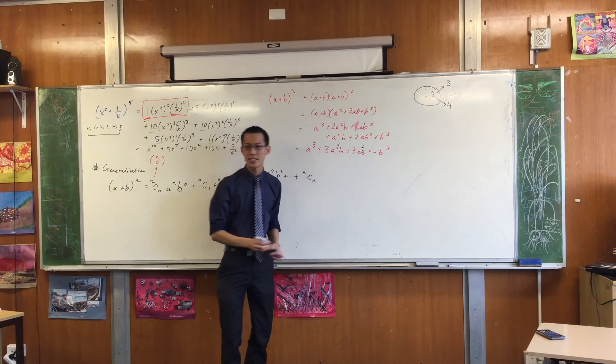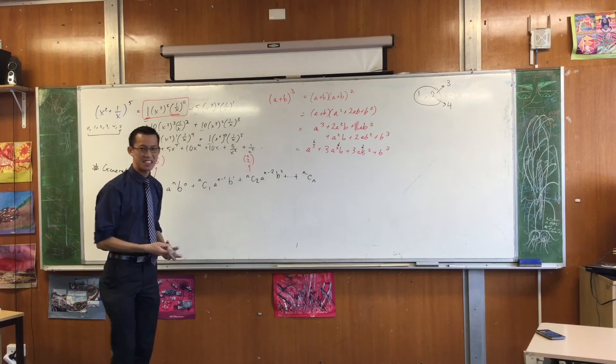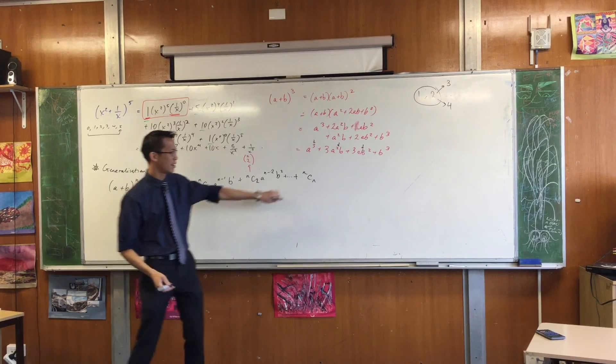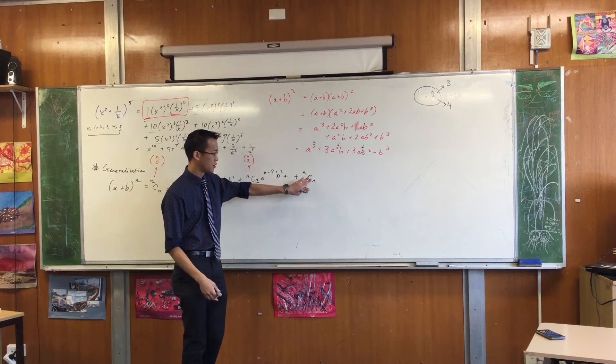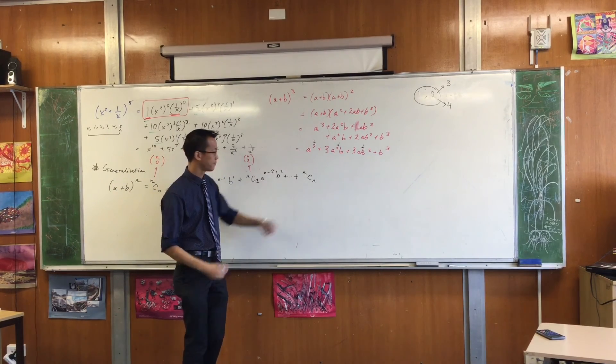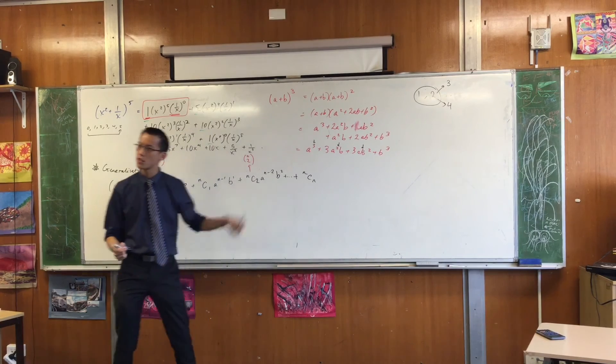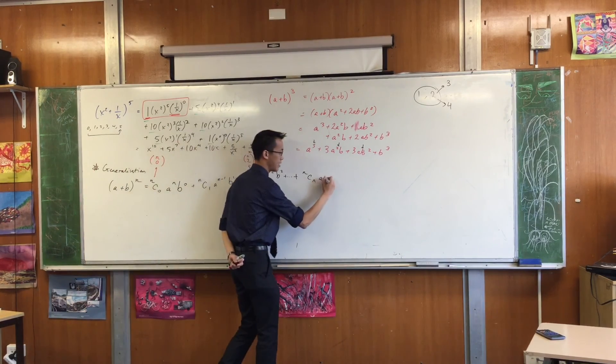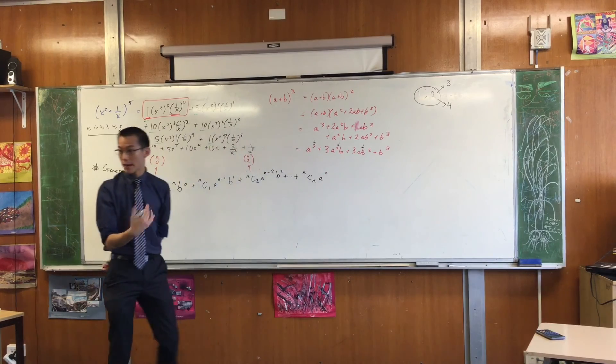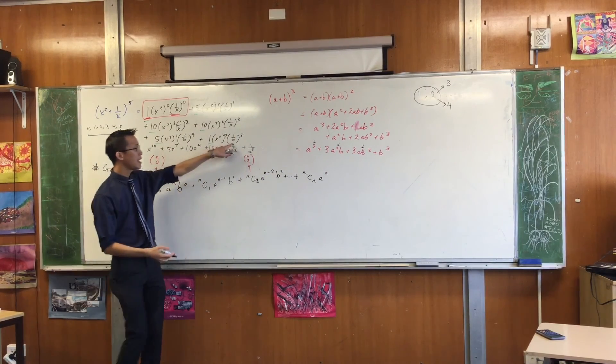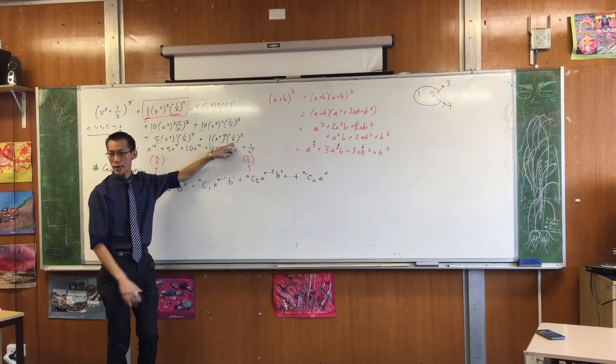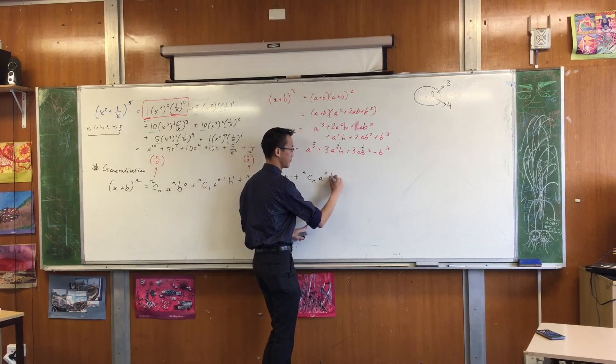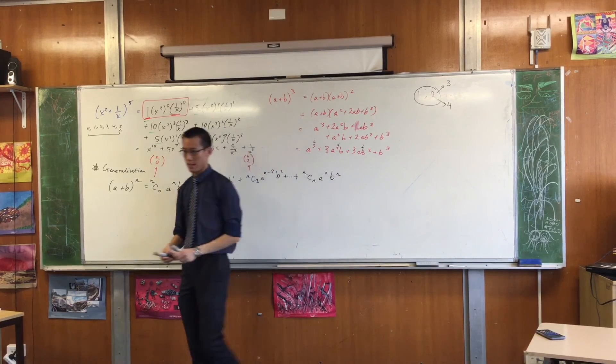If I had started counting from 1 instead of 0, this would be n, c, n plus 1, which is a little bit weird. I want to finish on a nice symmetrical thing. So that's the final binomial coefficient. By the time I get to the last term, how many a's are left? None of them. a to the 0. And by the time I get to the n, just like here, all the b's have taken over, and I should have exactly n of them. So that's the expansion.